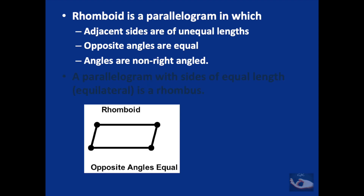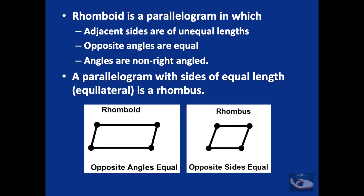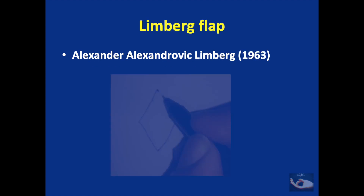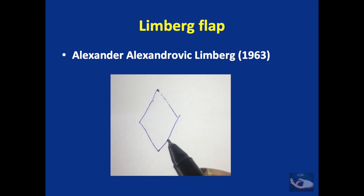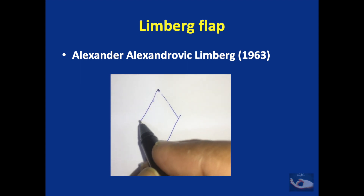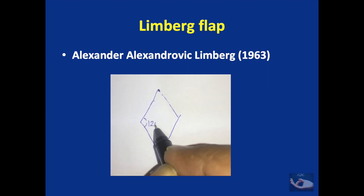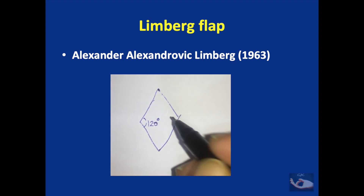The rhomboid is a parallelogram in which the adjacent sides are of unequal lengths, the opposite angles are equal, and the available angles are non-right angled. If the sides are of equal length, it is called a rhombus. The classic rhomboid flap is otherwise known as the Limburg flap, which was described in 1963 by Alexander Alexandrovich Limburg.